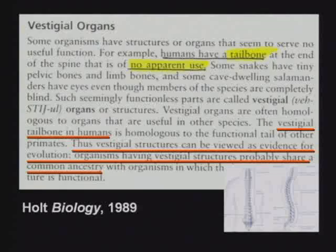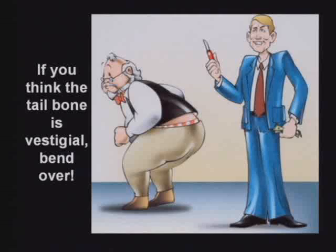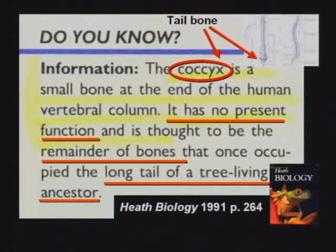This one says humans have a tailbone that is of no apparent use, and this is part of the evidence for evolution: 'The vestigial tailbone in humans is homologous to the functional tail in other primates. Thus, vestigial structures can be viewed as evidence for evolution.' I tell people: if you think the tailbone is vestigial, I will pay to have yours removed. There are nine little muscles that attach to the tailbone, without which you cannot perform some valuable functions. I won't tell you what they all are, but trust me, you need that tailbone.